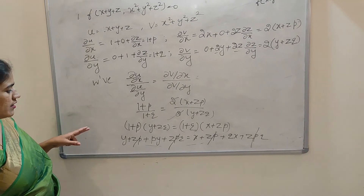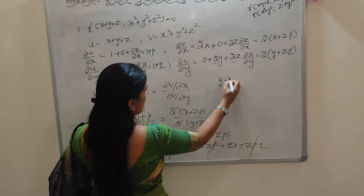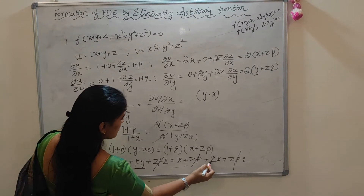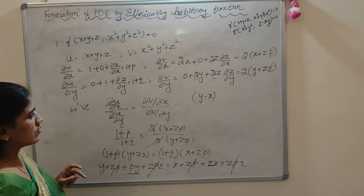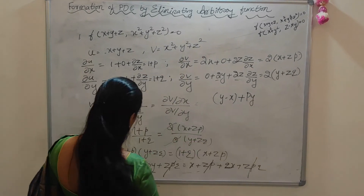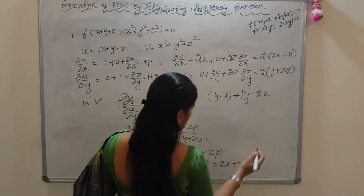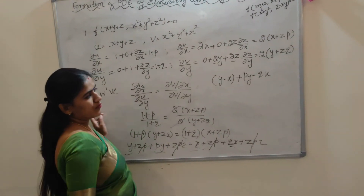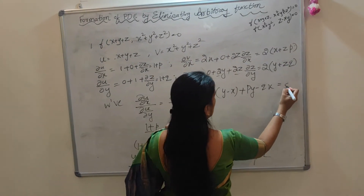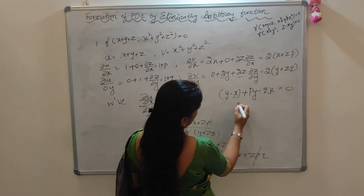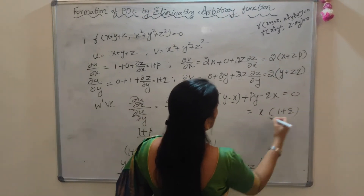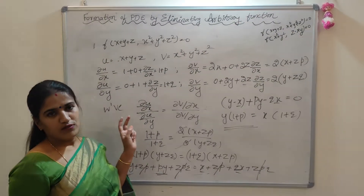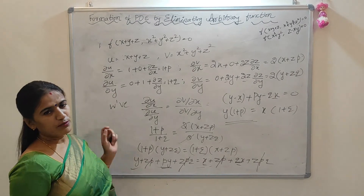Rearranging the remaining terms: y − x + py − qx = 0. Taking x as a common factor and y as another: (y−x) + p·y − q·x = 0, which can be grouped as x(1+q) − y(1+p) = 0, or equivalently y(1+p) − x(1+q) = 0. This is the final result and the solution for our required problem.